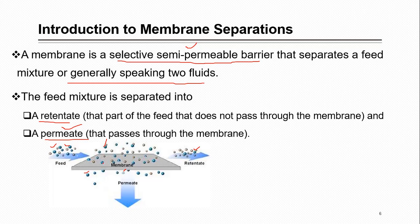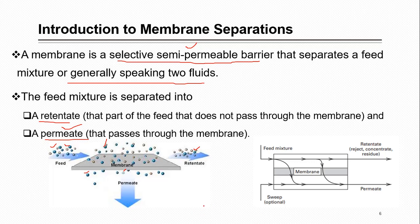This also differentiates membranes from simple filters. Filters work purely based on size — large particles are retained and small ones pass through. Membranes involve other phenomena as well, which is what distinguishes them from common simple filters. Looking at the textbook schematic: the feed enters a module, and through the membrane some components pass through as permeate while the rejected portion that does not pass through is called retentate.